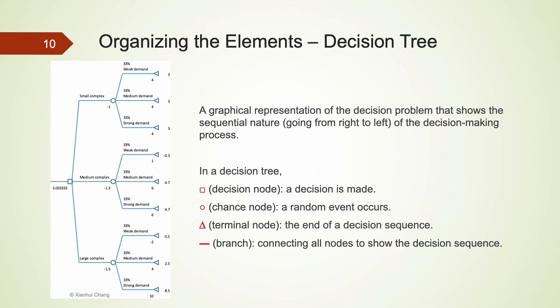Along the path, we may draw a square or a circle. A square is a decision node where a decision or an alternative action is made. In our example, that would be whether we build a small or large complex.